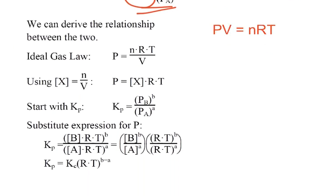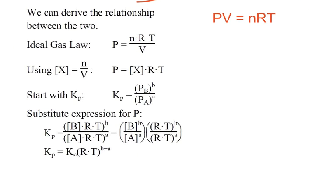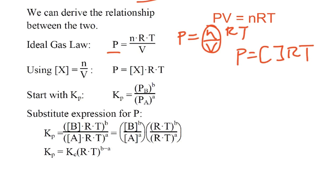So the start of this is our old friend PV equals NRT. If we have PV equals NRT, we can solve for P, and so P is equal to NRT over V. Now we're going to smoosh this just a little bit, and we're going to say P equals N over V times RT, because this is moles, N is moles, and V is volume in liters, and moles per liter, we know that that's concentration. So what we're really saying is that the pressure is equal to the concentration times R times T.